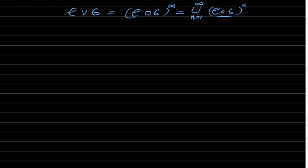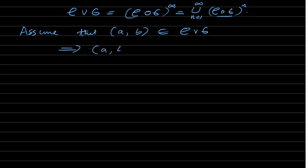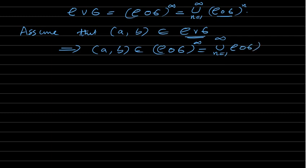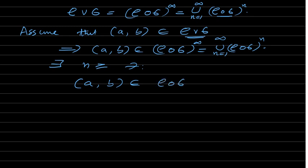Now let's prove our theorem. Assume that the pair (A, B) belongs to rho join sigma. This implies the pair belongs to rho join sigma, which equals rho composition sigma power infinity — which we already proved — equal to the union from n=1 to infinity of rho composition sigma power n. So it is in the union, thus there exists n ≥ 1 such that (A, B) belongs to rho composition sigma power n.